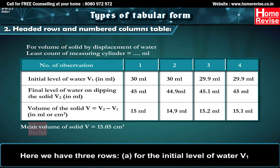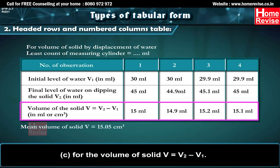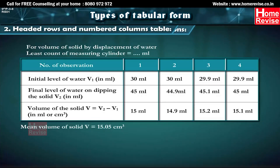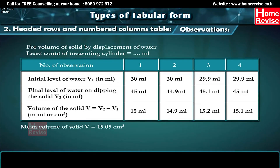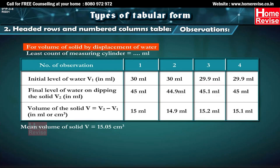Here we have three rows: A for the initial level of water V1, B for the final level of water V2 on dipping the solid, and C for the volume of solid V = V2 − V1. If the experiment is repeated four times, the table has four columns. Least count of measuring cylinder = (dash) millilitres.